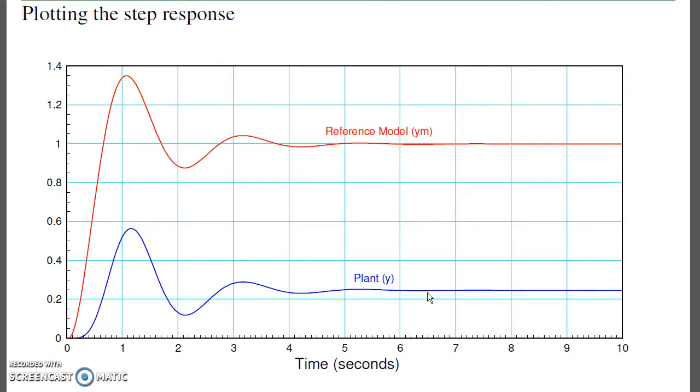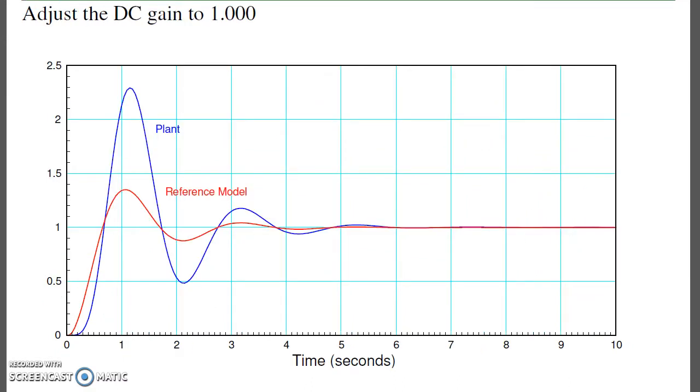Given my weightings Q and R, this is the best I can do. If I want to get closer, I'll use more input. It's somewhat hard to tell how this is behaving because the DC gains are different. I can fix that just by scaling the input, so the DC gains are both 1. If I do that, then here's the output.